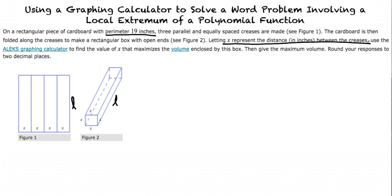Let's first write an equation for our perimeter of the unfolded cardboard in terms of x and l. Write it as 8x plus 2l equals 19, because there are 4x's here, 4x's here, 1l here, and 1l here. And when that all add together, it equals 19 inches.